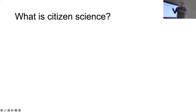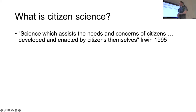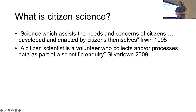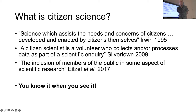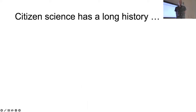I think it's helpful to start any talk like this by defining what citizen science is. The problem, however, is that there have been a lot of people who try to do that over the past few decades, and there's no real consensus. Alan Irwin first coined the term in 1995, saying citizen science is anything developed and enacted by citizens themselves to assist their needs. Silvertown in 2009 said a citizen scientist is any volunteer who collects or processes data as part of a scientific inquiry. Eitzel et al. in 2017 went very broad — anything that includes members of the public in some aspect of scientific research. The field is broadening, and right now citizen science is kind of anything you know it when you see it.